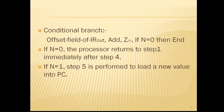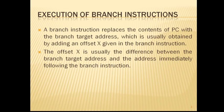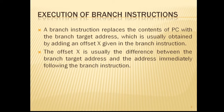The offset X used in a branch instruction is usually the difference between the branch target and the address immediately following the branch instruction. For example, if the branch instruction is at location 2000 and the branch target address is 2050, then the value of X must be 46. The PC is incremented during the fetch phase before knowing the type of instruction being executed — please make a note of this.